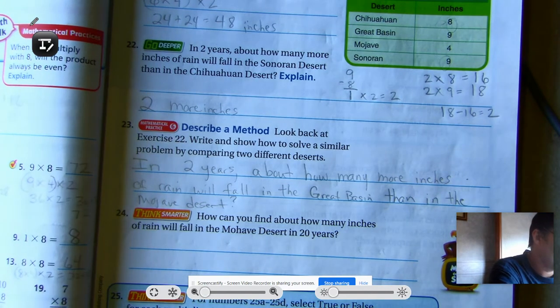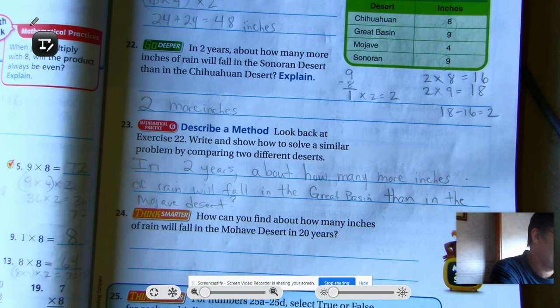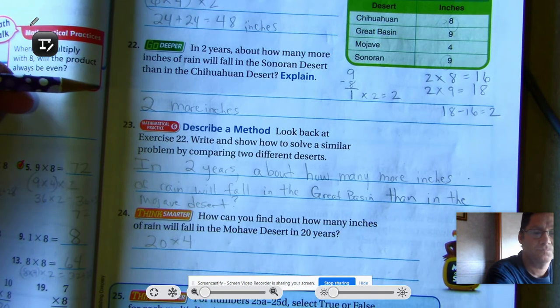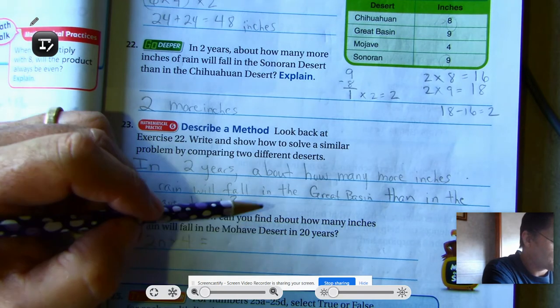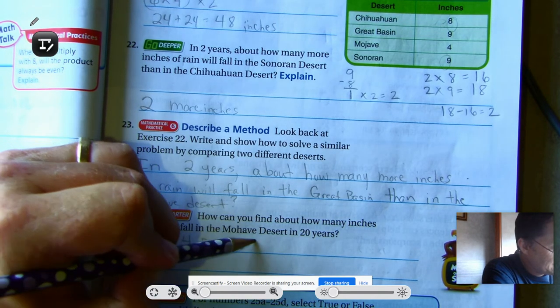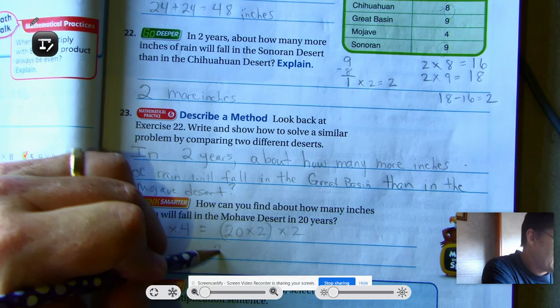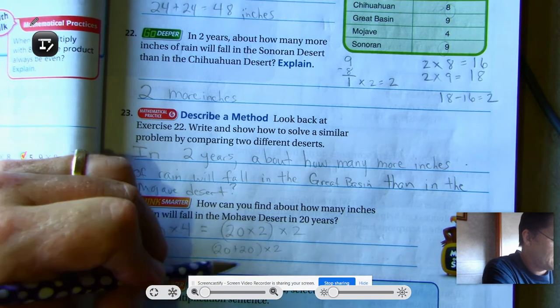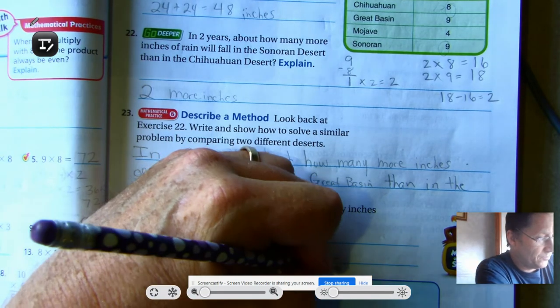How can you find about how many inches of rain will fall in the Mojave Desert in 20 years? So we'd have 20 times four. Well, I know it's an even number. But I know that I can also do 20 times two times two. And 20 times 2 is the same as 20 plus 20. So 40 times 2 is the same as 40 plus 40. So 80 inches of rain.